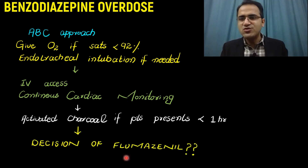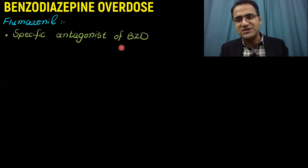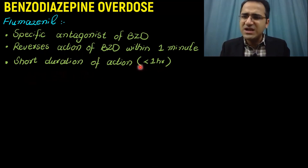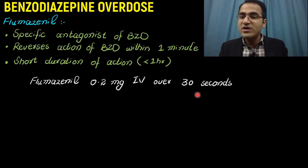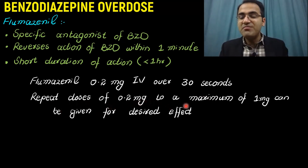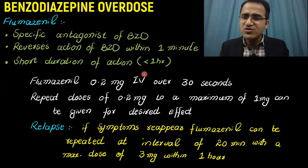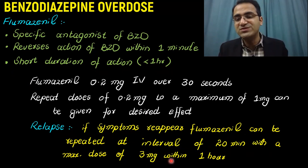You then need to decide whether to give flumazenil to the patient, as not all patients are candidates. Flumazenil is a specific antagonist and antidote for benzodiazepine overdose. It reverses the actions of benzodiazepines within one minute, but has a short duration of action of less than one hour, so repeat dosing may be needed. It is given as 0.2 mg IV, with repeat doses of 0.2 mg up to a maximum of 1 mg for the desired effect. Flumazenil can be repeated at intervals of 20 minutes up to a maximum of 3 mg within one hour, as symptoms may reappear after its effects wear off.